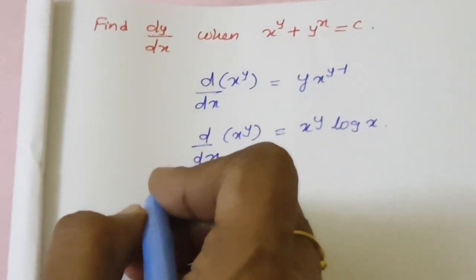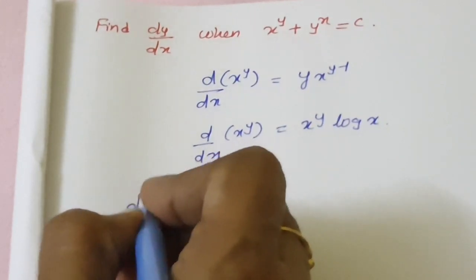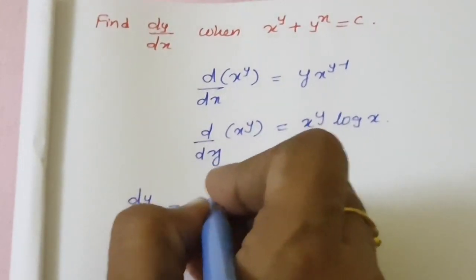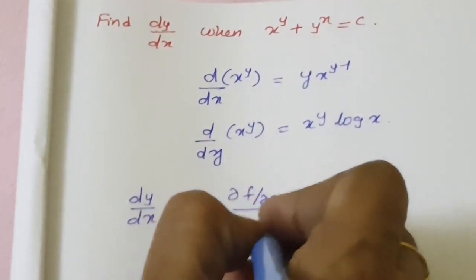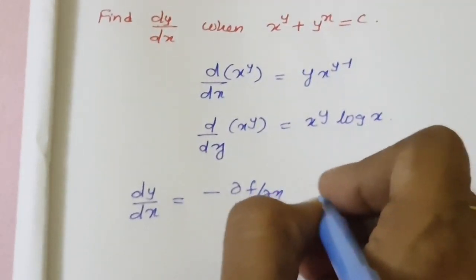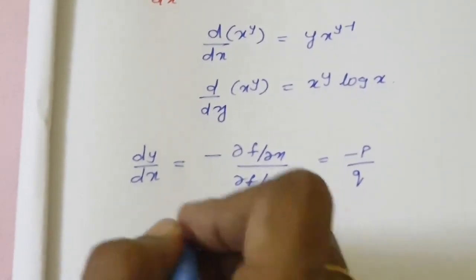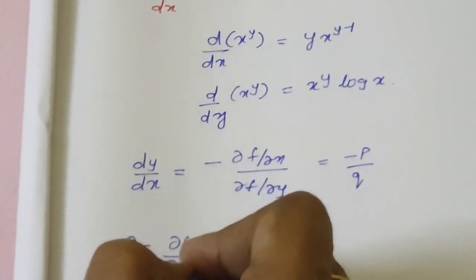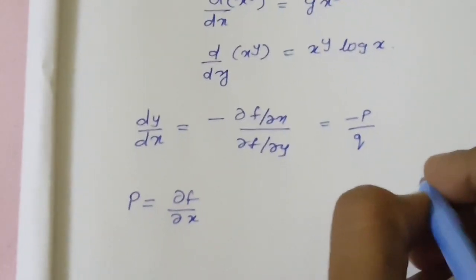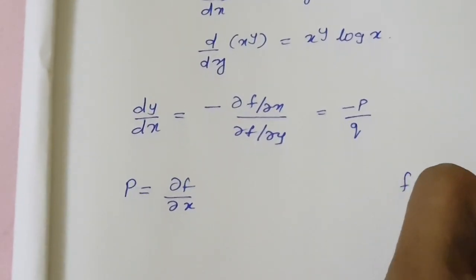Using these two formulas, we have to solve x power y plus y power x equal to c. We know that dy by dx is equal to minus ∂f by ∂x divided by ∂f by ∂y, where ∂f by ∂x is P and ∂f by ∂y is Q. Here f is equal to x power y plus y power x minus c.